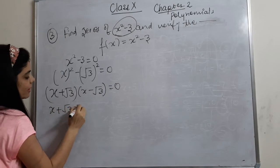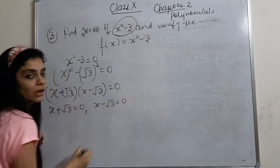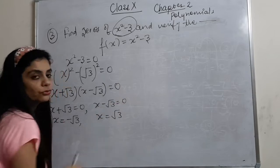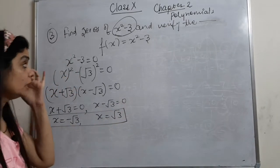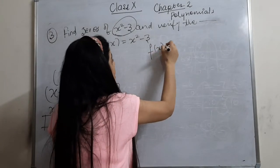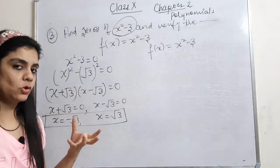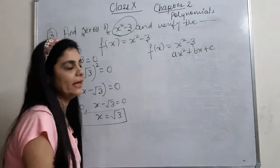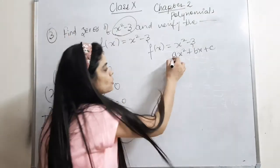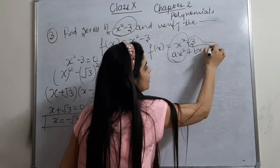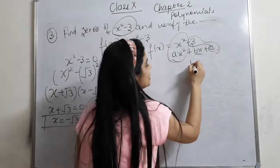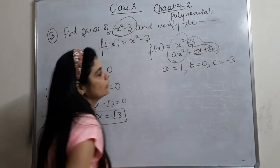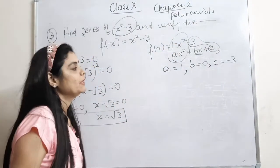Setting each factor to zero gives us x = −√3 and x = √3 as our two zeros. For the comparison method, we compare x² − 3 with ax² + bx + c. Since there is no x-term, b = 0. We get a = 1, b = 0, and c = −3.